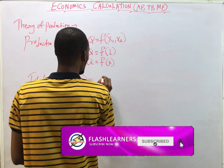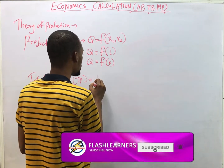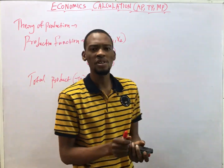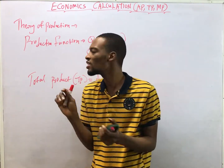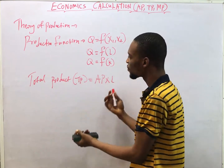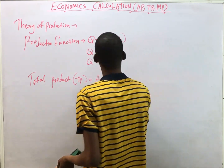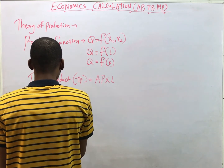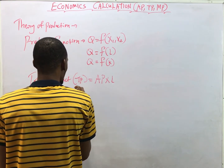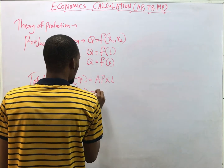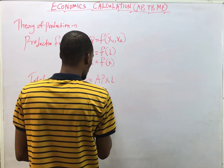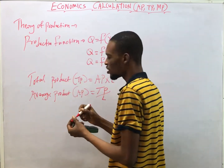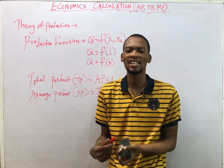Now — TP, AP, and MP. Total product is simply the total output obtained after employing all factors of production. You've used all your resources to produce — this is the total product. Average product is output per worker: total product divided by labor or capital. It's the output that each worker contributes.